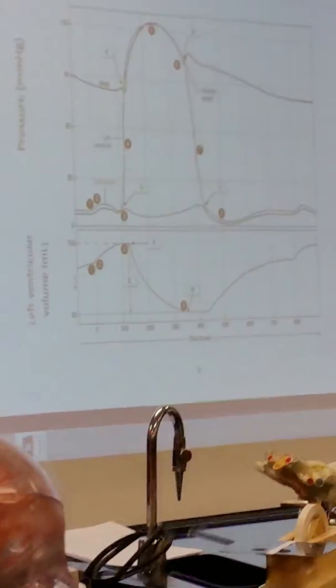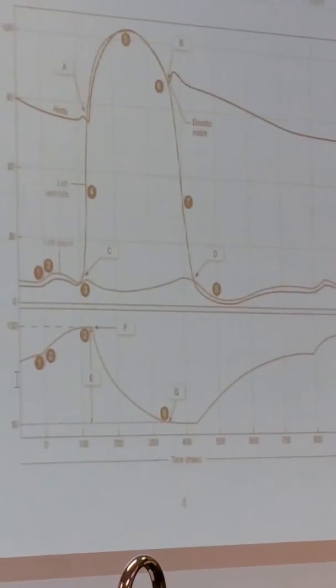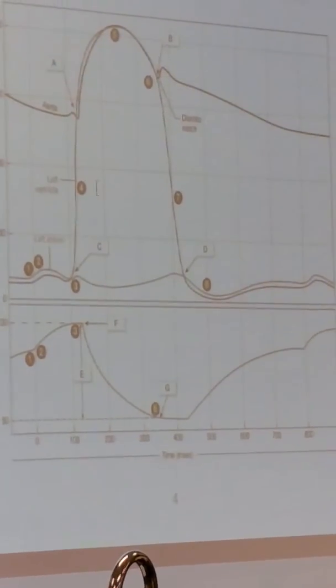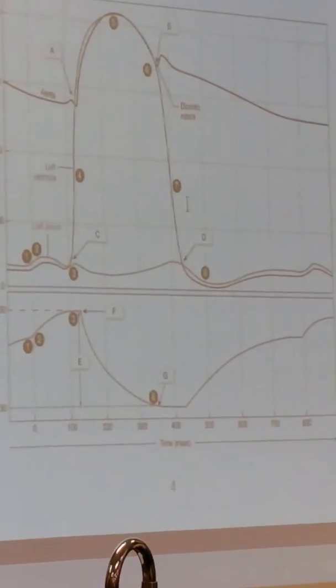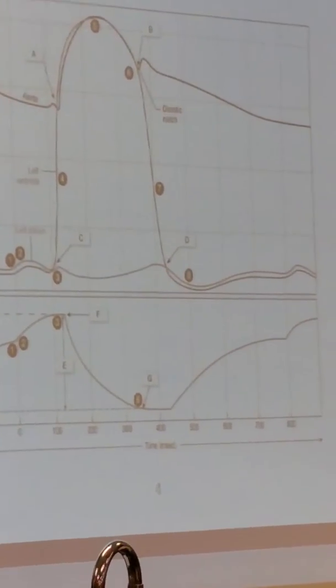That picture I actually spent a lot of time on during the lecture. I went through and told you about isovolumetric contraction (that's number four), isovolumetric relaxation (number seven), and the dicrotic notch.